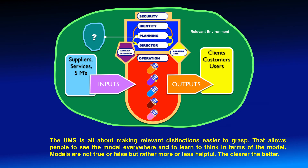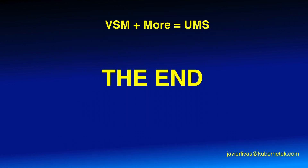The UMS is all about making relevant distinctions easier to grasp. That allows people to see the model everywhere, and to learn to think in terms of the model. As you know, models are not true or false, but rather more or less helpful. But the clearer, the better. Thank you for watching.